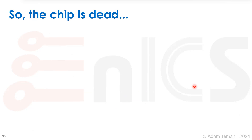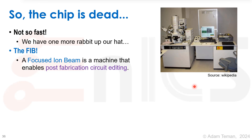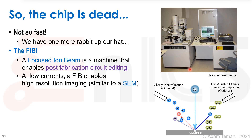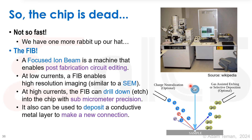We still have one rabbit up our hat — it's called the FIB. A Focused Ion Beam is a machine that enables post-fabrication circuit editing. It's a really big and really expensive machine. At low currents, a FIB enables high-resolution imaging very similar to a SEM — it shoots ions at the sample, the ions come back, and we get an image. But at high currents we can drill down or etch away into the chip at sub-micrometer precision — you can really cut things away inside the circuit.